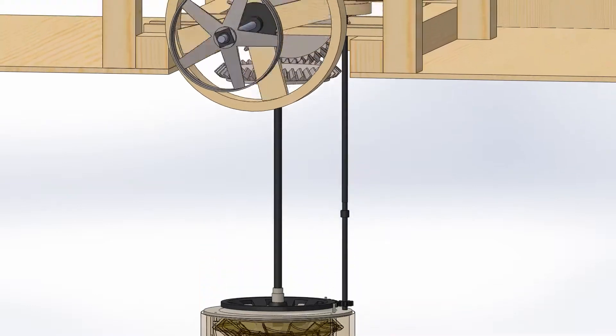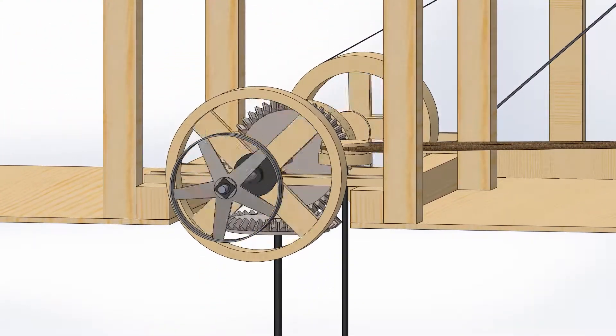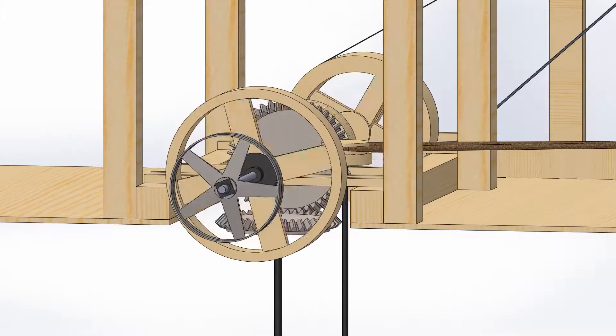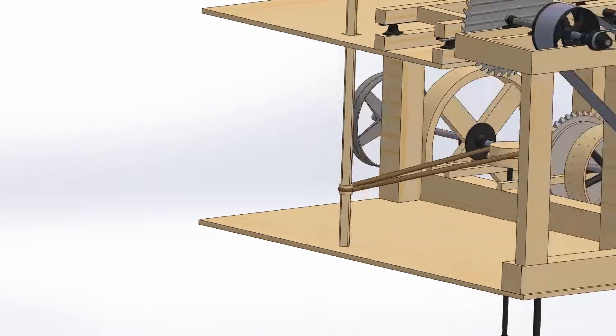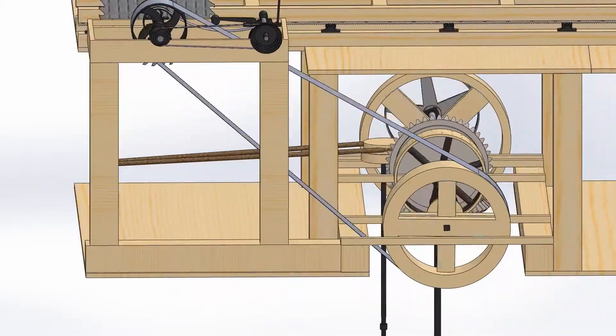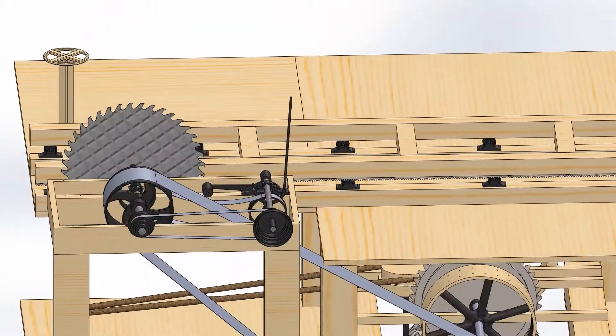The power from the turbine is transmitted to the main shaft on the lower level via bevel gears. That shaft has flywheels that increase rotational inertia to maintain smooth rotation. A belt transmits power from the main shaft on the lower level to the saw shaft on the upper level.